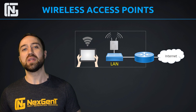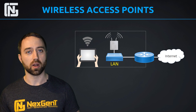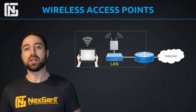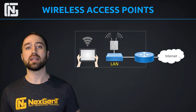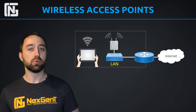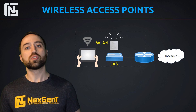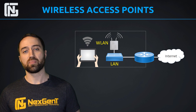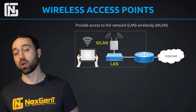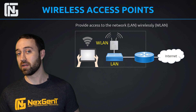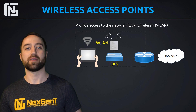We need this wireless AP to provide wireless access to our network. And whenever we install a wireless AP, we have in effect created a WLAN — a wireless local area network. So we can say that our wireless access points provide access to the network, or the LAN, wirelessly. And when we do that, it's called a wireless LAN.